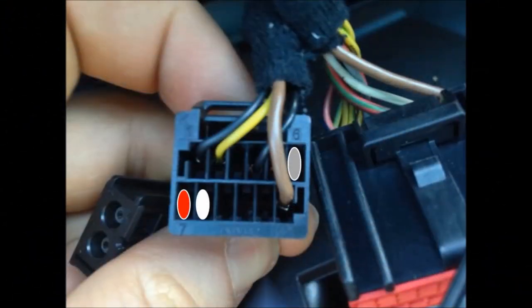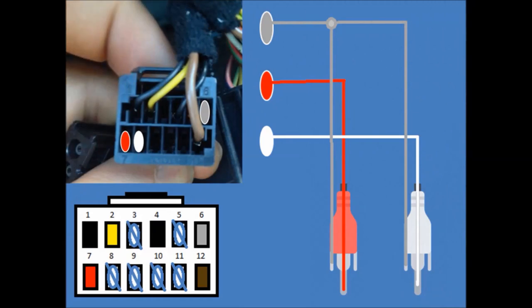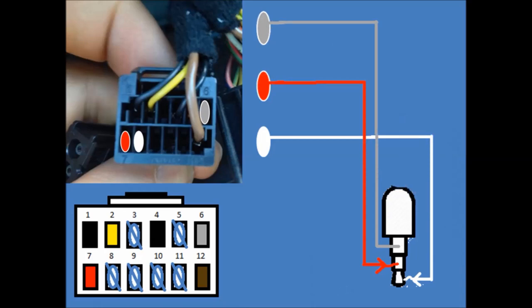But this one is just showing you here so grey is earth, red is right and white is left and that's the setup if you're using an RCA plug. You can just put the pins in there and glue them in or this is the setup for an AUX lead.